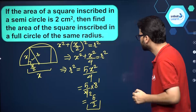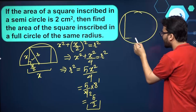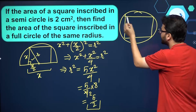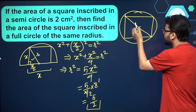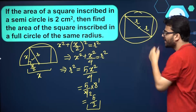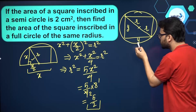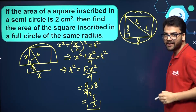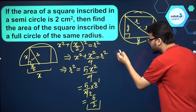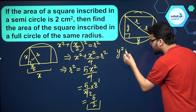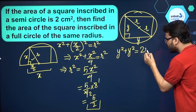Now we have to find the area of the square inscribed in a full circle of the same radius. If we have a full circle with a square inscribed in it, we can join the diagonal to the center. Obviously this diagonal equals 2r — the full diameter. Suppose the side of the square is y, so this side is also y. This forms a right-angled triangle, and we can apply the Pythagorean theorem.